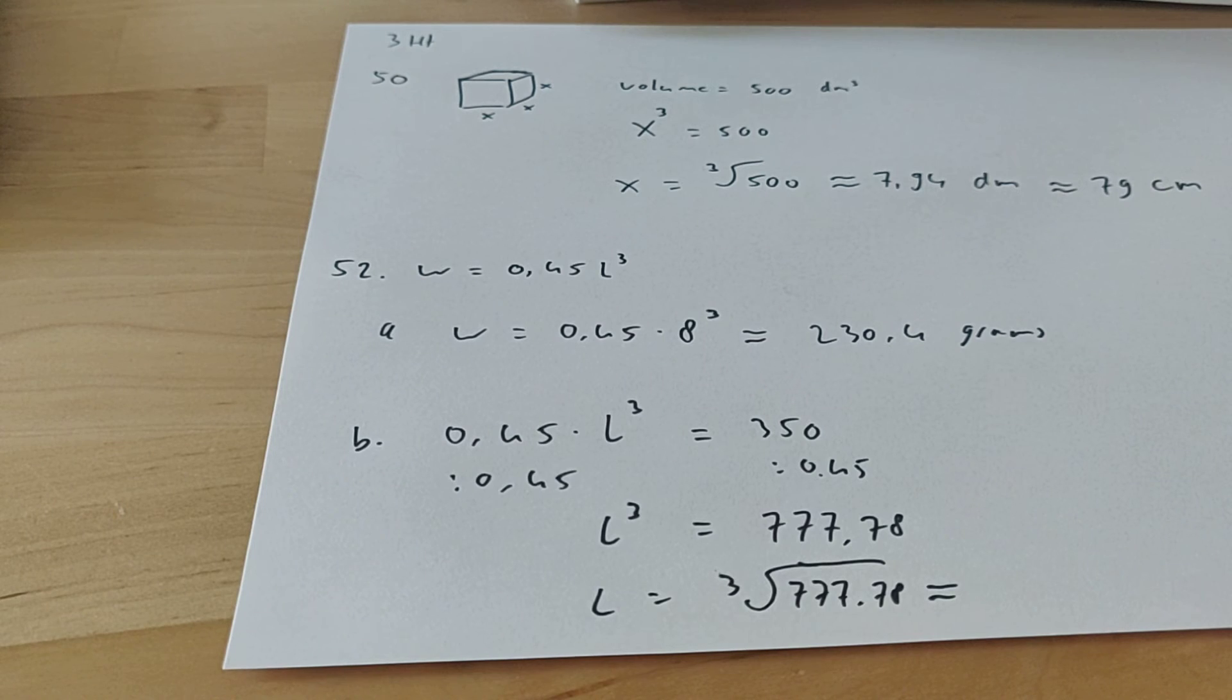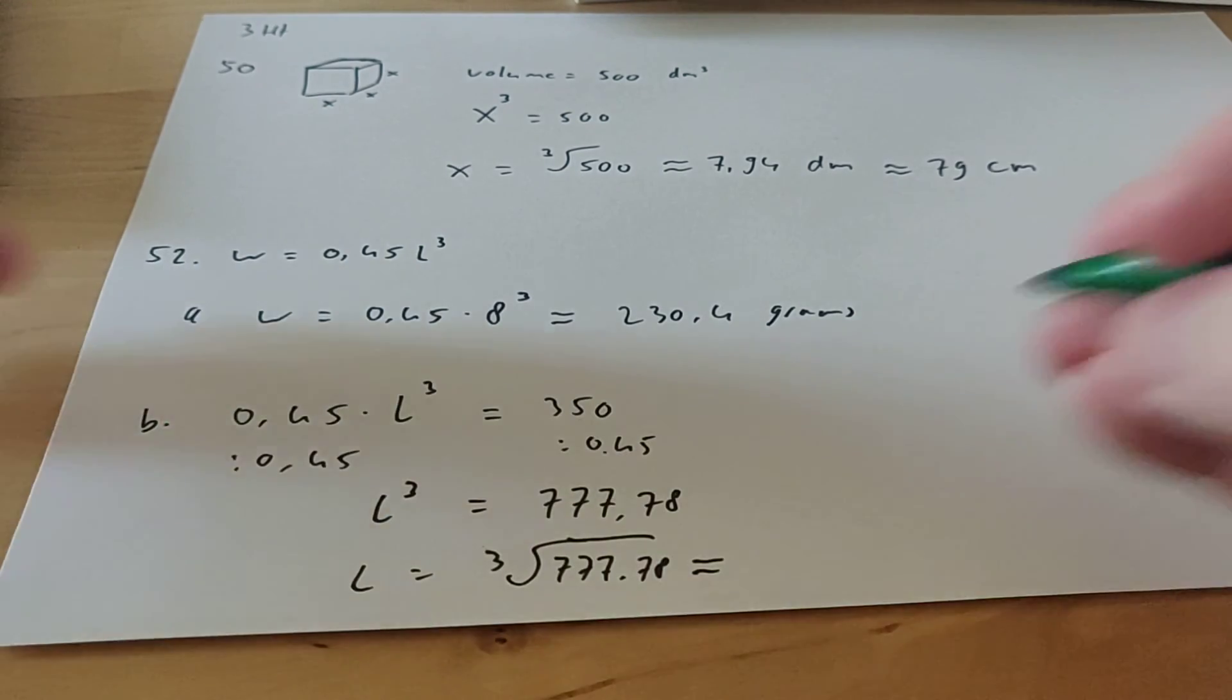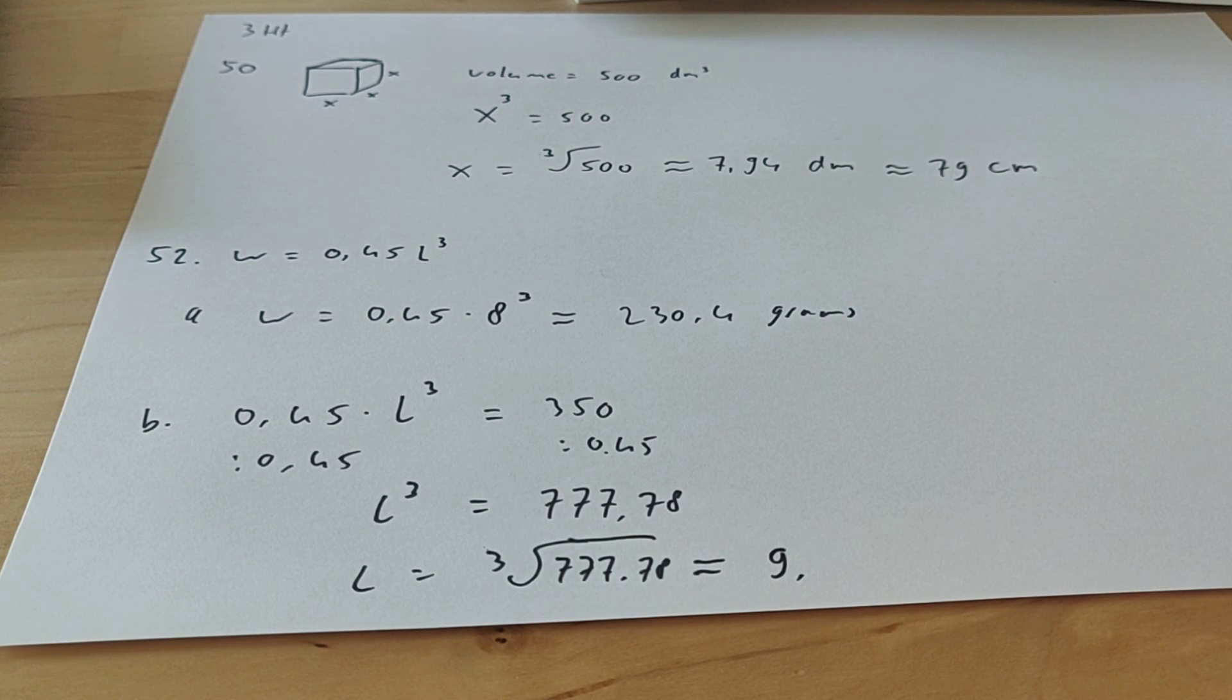So this is how you calculate that. So let me quickly use the calculator I have in front of me. You get 9 point something. Let me see what we have to round off to. Round off to the nearest centimeter. Yeah, this is in decimeters.